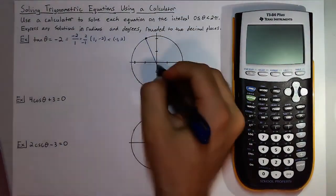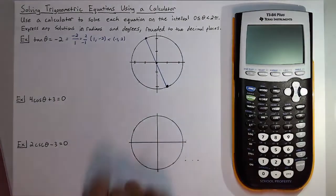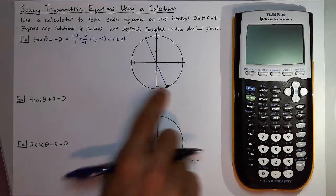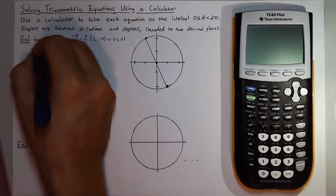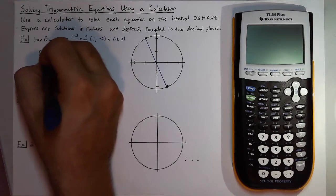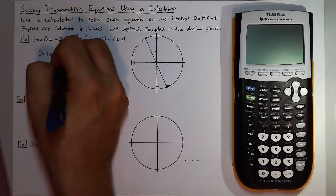Now we have these two angles that are possible solutions. So now we can use that inverse trig function I was talking about. So theta can equal tangent inverse of negative two.